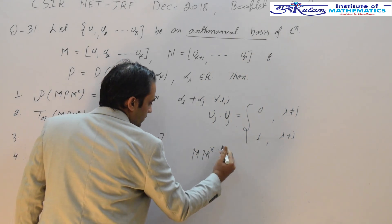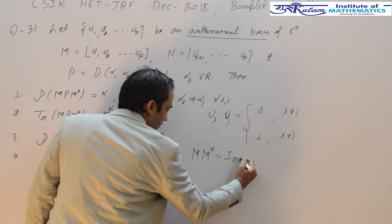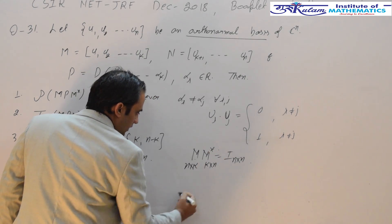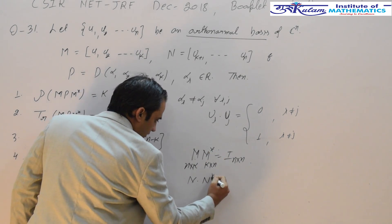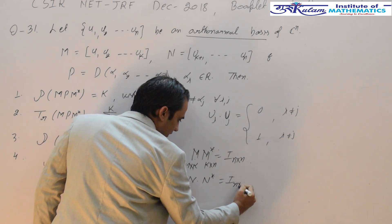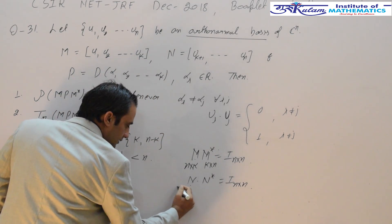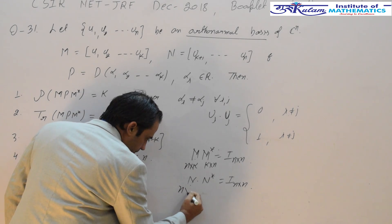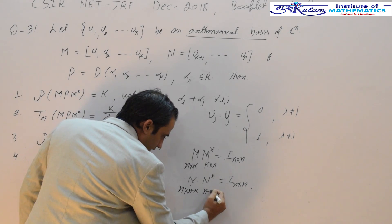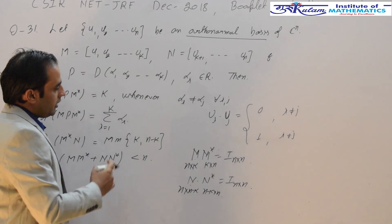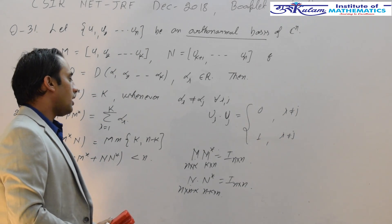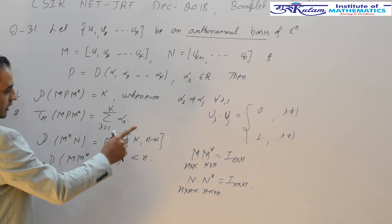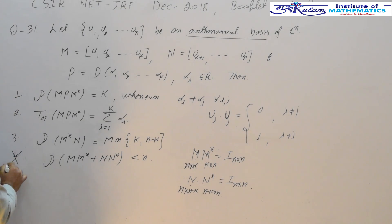Since the columns of M are orthonormal vectors, M times M-star is the identity matrix. This is an N cross K matrix multiplied by a K cross N matrix. So M times M-star and M times M-star are identity matrices. The sum of these two matrices is 2 times the identity, and the rank of that matrix should be N. So the fourth option is definitely false.